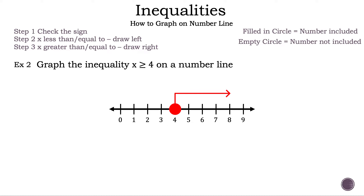Now let's check. Let's write down x greater than or equal to 4. We need to pick a number to the left of 4 and a number to the right of 4. First, let's use the number 3. Is 3 greater than or equal to 4? That is not true. Next, let's use 5. Is 5 greater than or equal to 4? That is true. So the arrow is pointed in the correct direction. That is example 2.